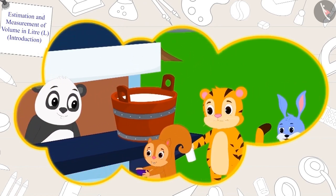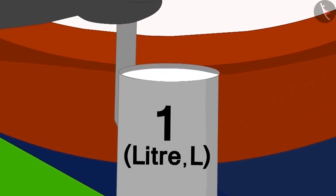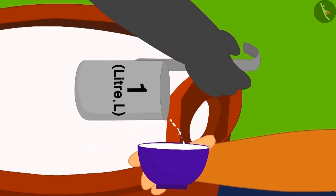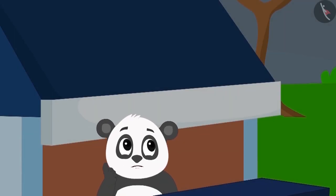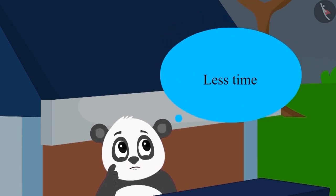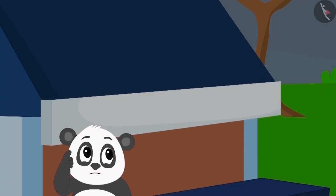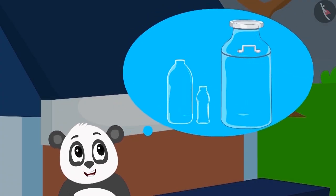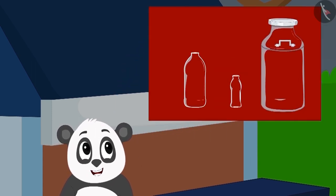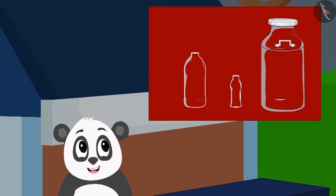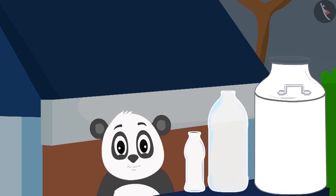It takes a lot of time to measure the milk for every customer using the one-liter measure. Golu is wondering how he can sell milk to his customers in the shortest time possible. That's when Golu got an idea: why not fill bottles and cans of different capacities in advance? By doing this, he will be able to sell milk to his customers very fast.